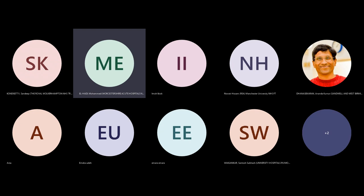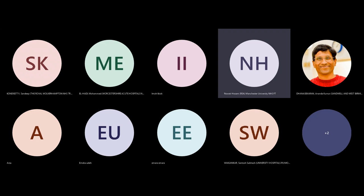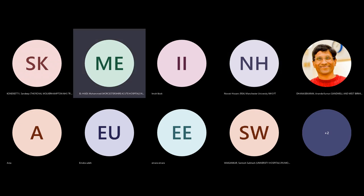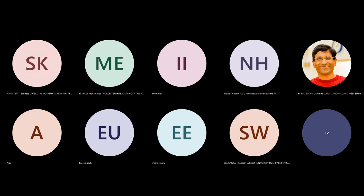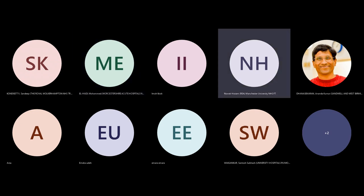The split renal function is 25% on the right and 75% on the left. Given that it's more than 10%, I will be tempted to treat the staghorn stone. In my practice, what we do for these patients is PCNL or a rendezvous procedure — ACIRS — doing extra-renal surgery, and I will consent the patient for ACIRS.